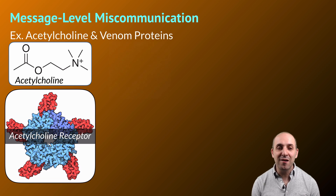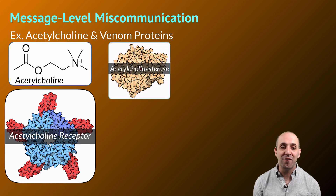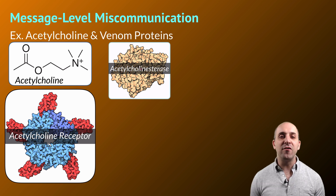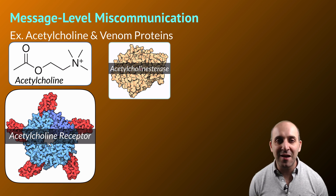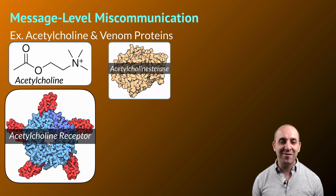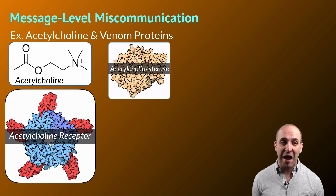You then need the muscle to relax again, and that is accomplished through the action of an enzyme known as acetylcholinesterase. Acetylcholinesterase is also present in the neuromuscular junction, and its job is to take the acetylcholine molecules that are released and break them down so that they no longer cause the muscle cell to contract. The muscle cell will then relax.